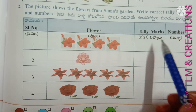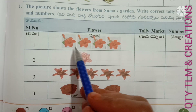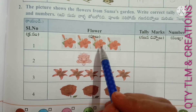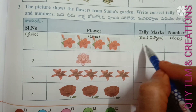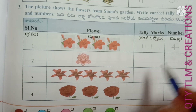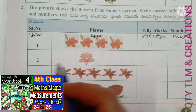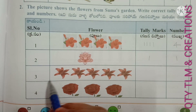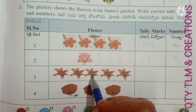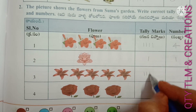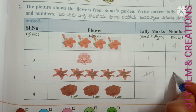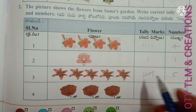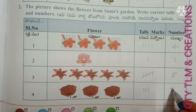Serial number, flowers, tally marks, and number. Number 1 — hibiscus flowers. How many hibiscus flowers are there? 1, 2, 3, 4. So we can write tally marks 4 and the number 4. Next, lotus — how many lotus are there? Only 1. So we can write the number 1. And lilies — how many lilies are there? 1, 2, 3, 4, 5. So we can write the number 5 here. And roses — how many roses are there? 1, 2, 3. So we can write the number 3 here.